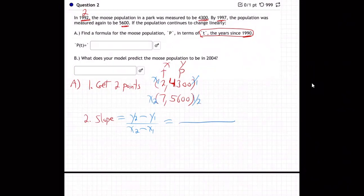So it's going to be Y2, 5,600 minus Y1, 4,300 over X2 minus X1. The center is at 1,300, I think. Yeah, 1,300 over 5.